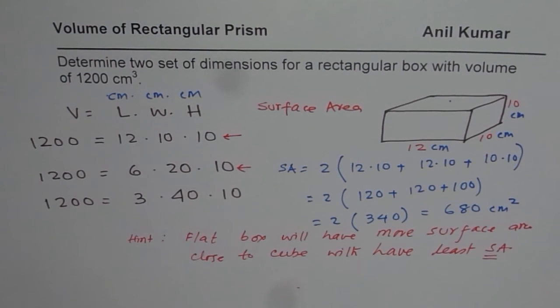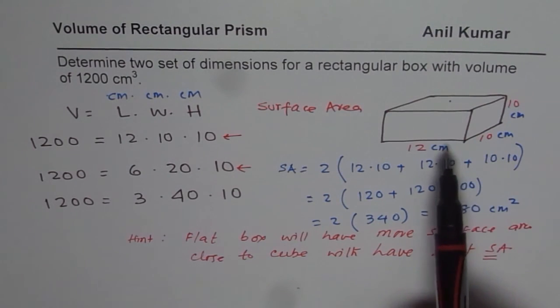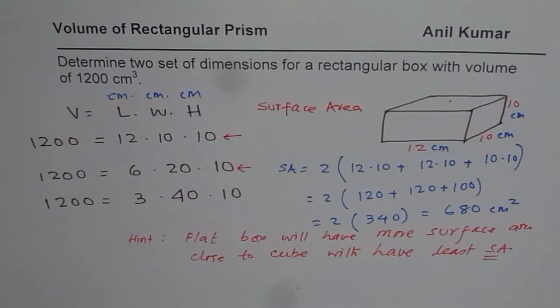So this is our observation. So if you could make it closer to cube, you may find less surface area. But if you make it flatter and flatter, you will find that the surface area for the same volume increases. So that is how it is. So that is an application for this particular equation. I hope that helps. Thank you.